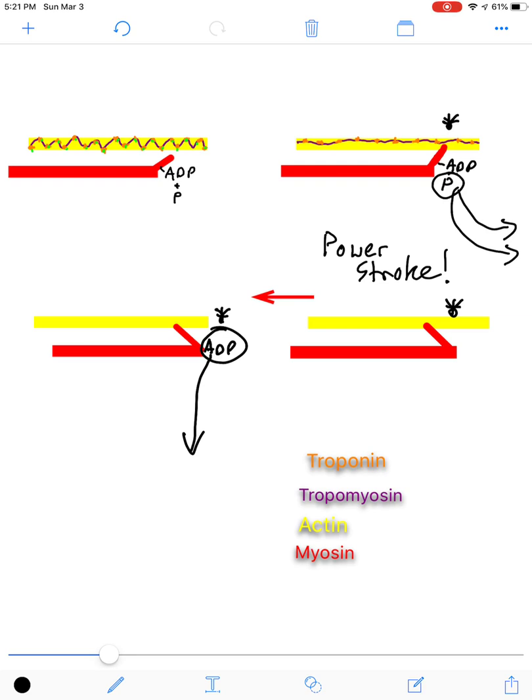Now, once the ADP leaves, you have an open ATP binding site on the myosin. And what that's going to cause is a new ATP will come in and take its place. And once it does that, it is going to be broken down back to the ADP and the phosphate.